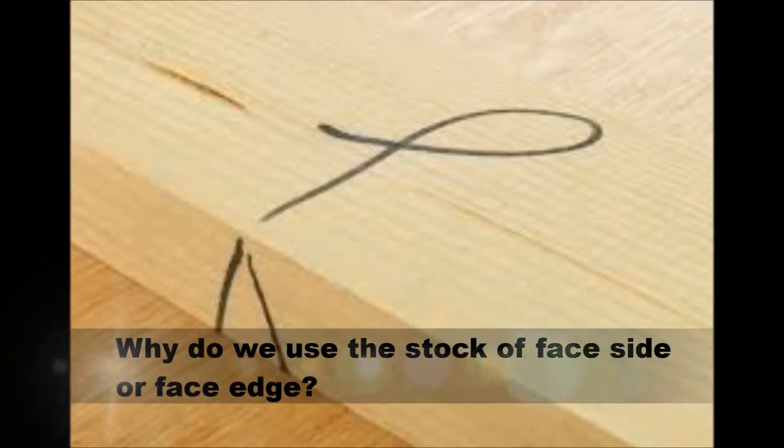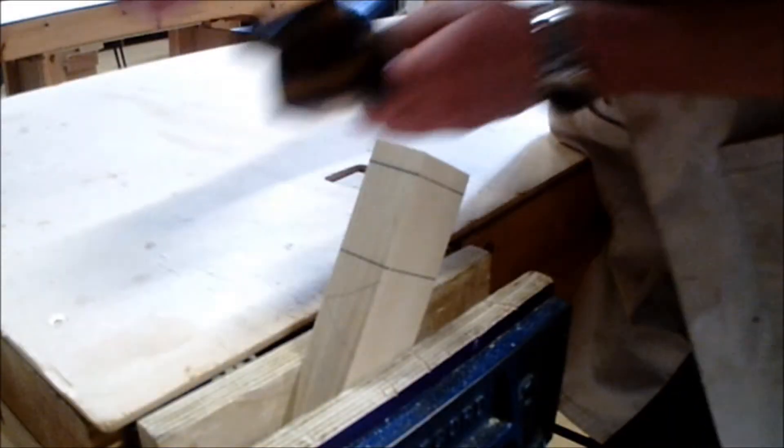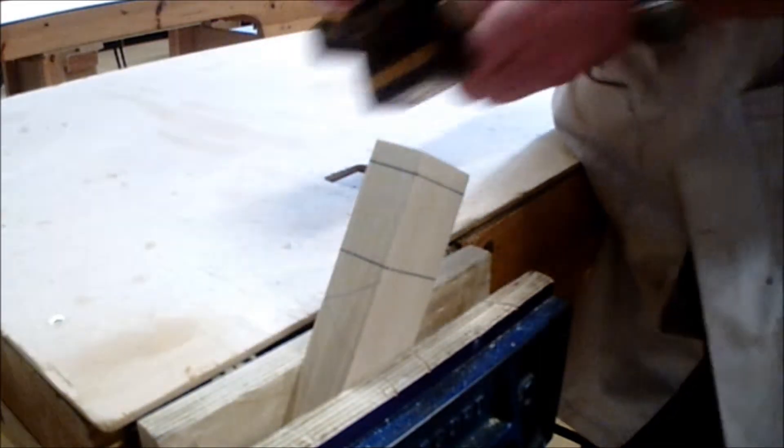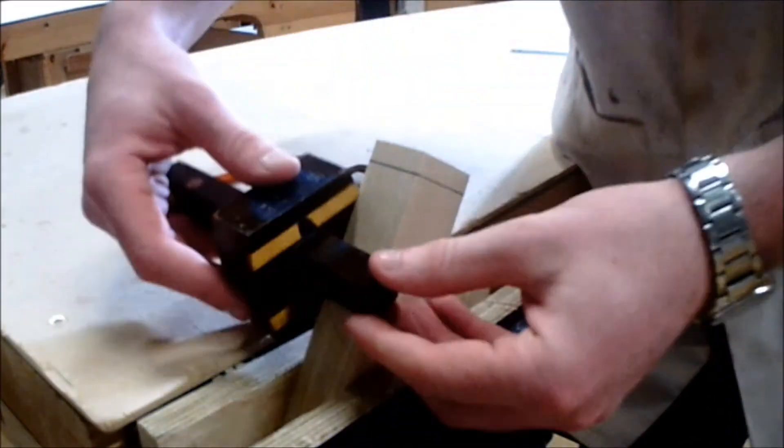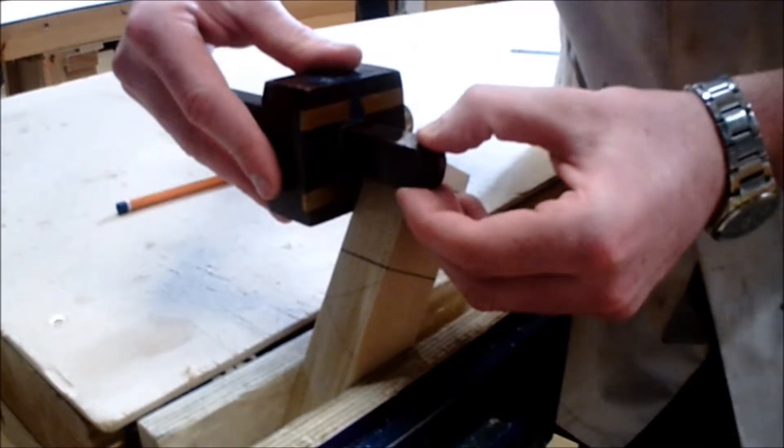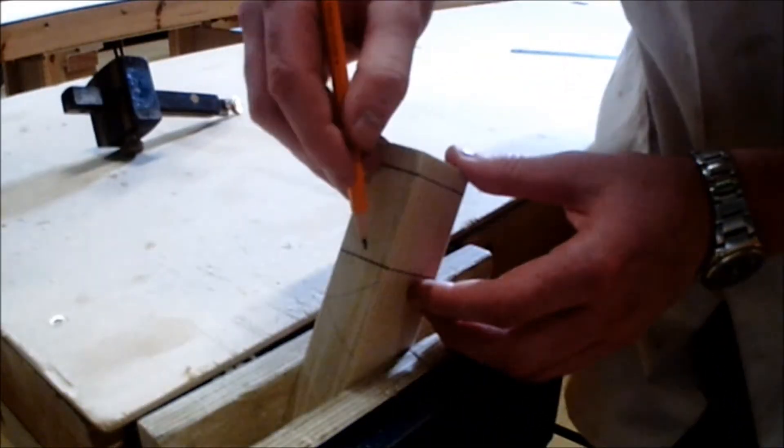Why do we use the stock of face side and face edge? When we use the stock of face side and face edge, these are our two datum edges which create a benchmark for marking out. This provides good accuracy and precision in the marking out process and ensures that your lines are correct.